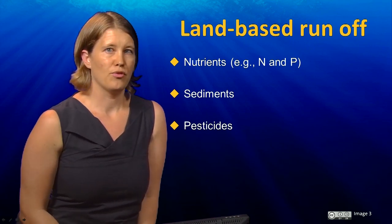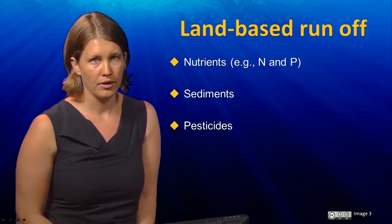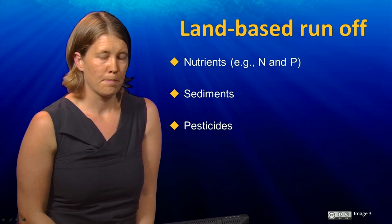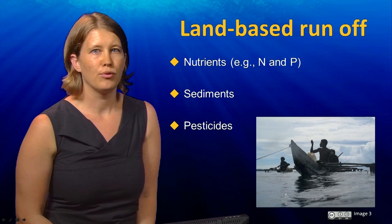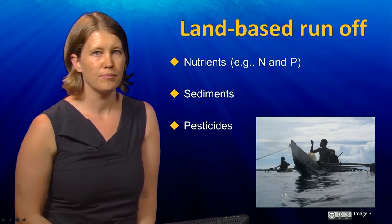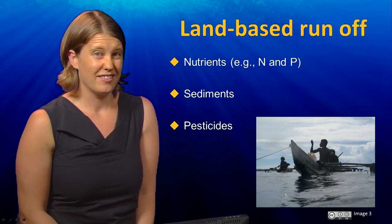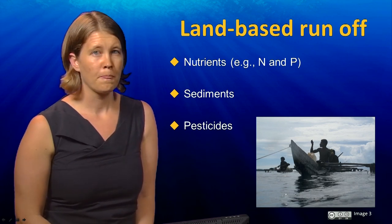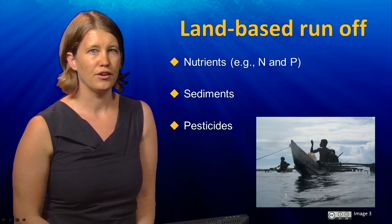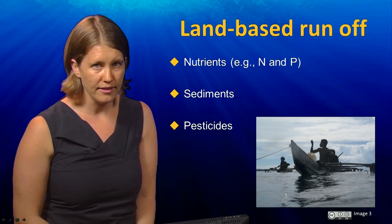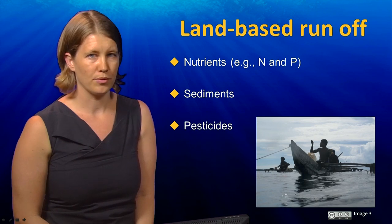Pesticide runoff comes from agriculture and forestry plantations and can result in dieback of mangroves as well as coral bleaching. Runoff not only affects marine habitats and species, but can have perverse outcomes for the millions of people that rely upon fisheries as a source of income and livelihood, which is the case in many tropical regions. Further, the problems associated with runoff will increase with climate change in areas predicted to experience more intense and frequent extreme weather events, such as heavy rainfall, floods, and tropical cyclones.